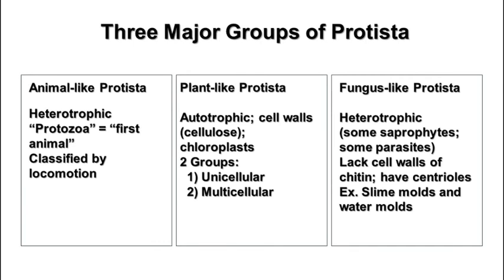The first group is the animal-like Protista, which are heterotrophic. They're often called protozoa, which means first animal, and they're classified into groups based on how they move and their type of locomotion.